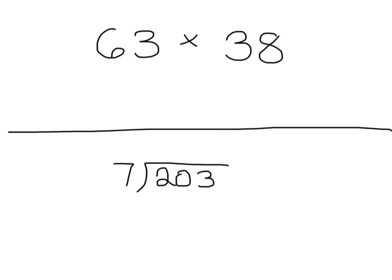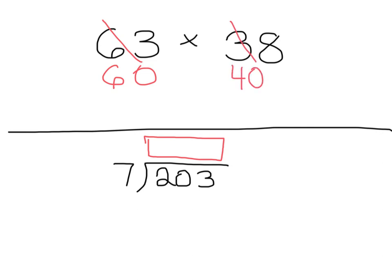We're going to take a look at estimating quotients. Remember, the quotient is the answer to a division problem. So down here in this problem, I would be estimating the quotient. But before we do that, I want to look at how we would estimate a product. So if I was going to estimate 63 times 38, what I would probably do is say this is about 60 and this is about 40, and then I would get my estimate: 2,400.